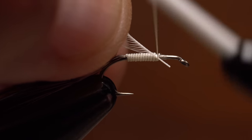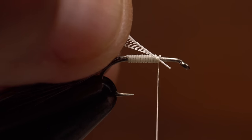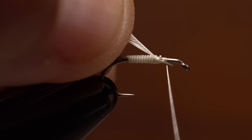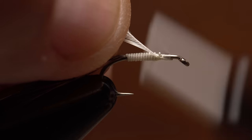Lay the stem against the near side of the hook and take thread wraps to secure it. Try to keep the area flat and smooth as this will allow the hackle to wrap correctly.